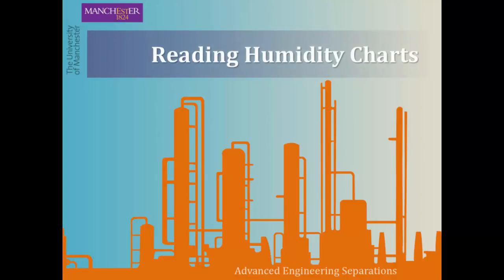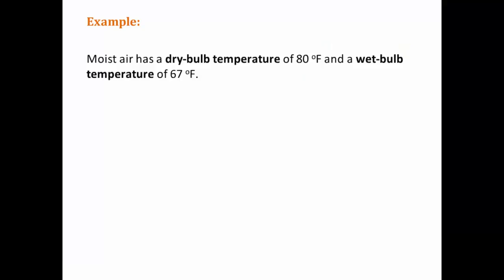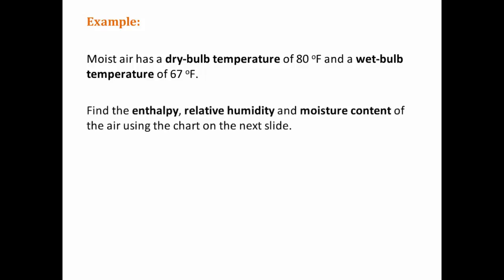We're going to do an example on reading a humidity chart. This will be useful for studying dryers. The question says that moist air has a dry bulb temperature of 80 degrees Fahrenheit and a wet bulb temperature of 67 degrees Fahrenheit. We need to find the enthalpy, the relative humidity, and the moisture content of the air using the chart on the next slide.